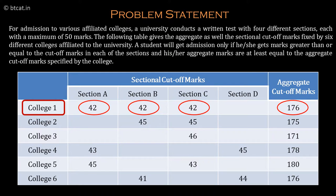There are some blanks in the table, which means we are not given what cutoff will be there for that particular section corresponding to that particular college. So we can assume anything, since there is no cutoff specified there.